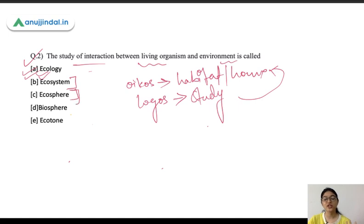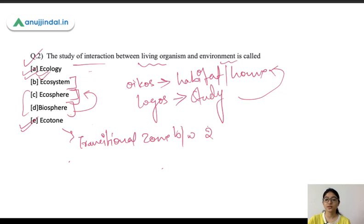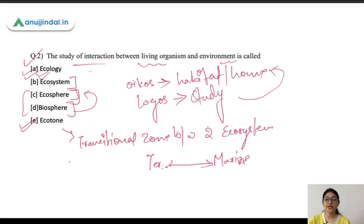An Ecosphere is that portion of the Earth and atmosphere where there is a possibility of life. Biosphere is a subset of ecosphere — they can be used interchangeably, but in a broader sense, biosphere is a subset of ecosphere where the Earth's atmosphere, lithosphere, and hydrosphere coexist. An Ecotone is the transitional zone between two ecosystems — for example, a beach is the transitional zone between a terrestrial zone and a marine area.